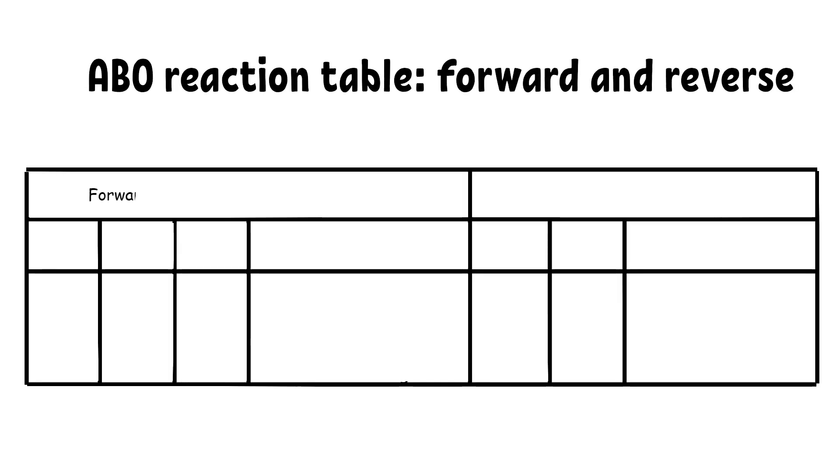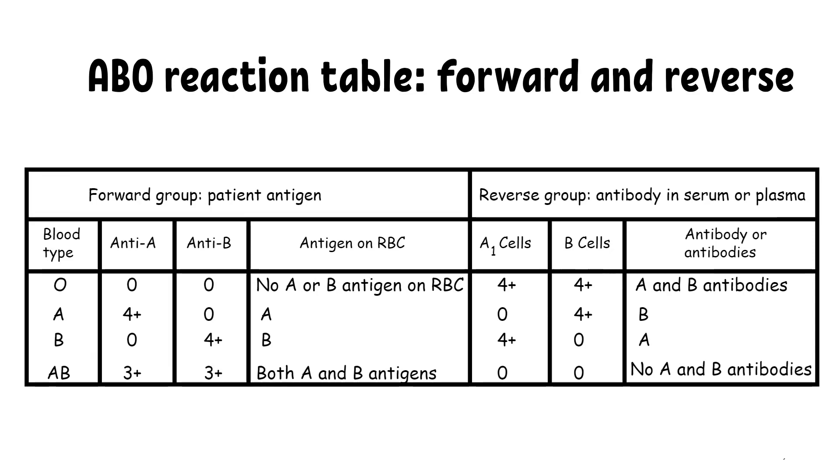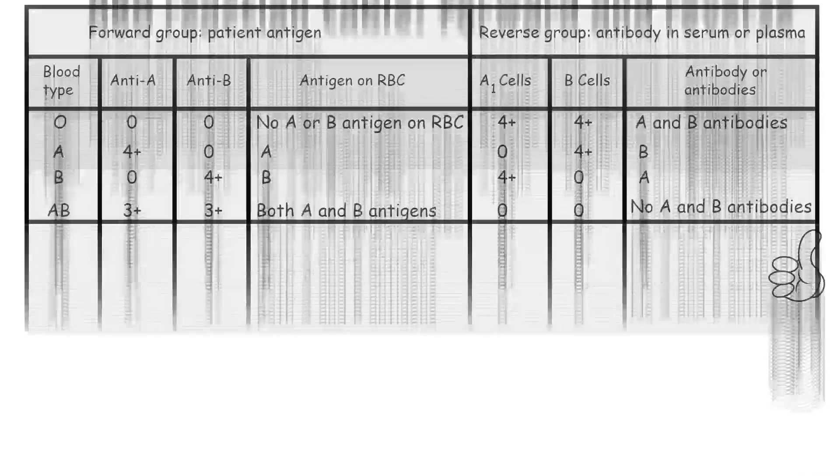Now that we understand and know what to expect for common blood group reactions, we can then take a look at the unusual reactivity. You will think of ABO subgroup or discrepancy when you perform ABO grouping testing and the forward and the reverse don't match. ABO subgroups represent phenotypes showing weaker reactivity with commonly used reagent.